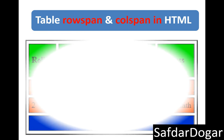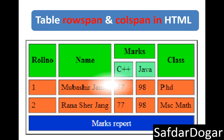We have one example of this. I have a table in which I will write the headers: Name and Marks. Marks has two subjects — Java and C++. Row number one has a name, C++ and Java marks, and the class is PhD. Row number two also has a name and C++ and Java marks.